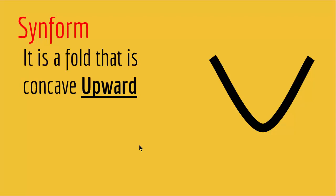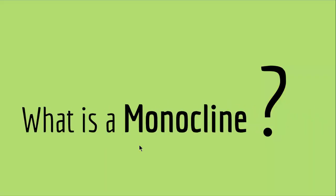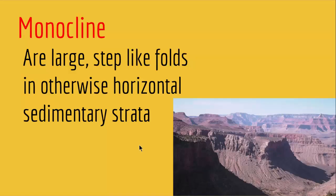Another type of folding is called a monocline. Monoclines are large step-like folds in otherwise horizontal sedimentary stratas. Monoclines are not U-shaped — whether upward or downward — but are actually step-like. You have a horizontal layer, then an inclination, then another horizontal layer. So it bends and goes flat again. Those are called monoclines.